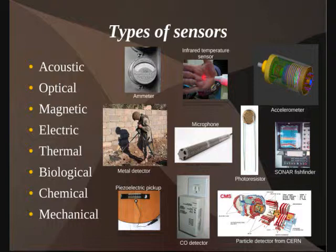For some specific examples: there's the ammeter, which detects the amount of current in a circuit. The infrared temperature sensor monitors temperature based on infrared radiation from an object. You're probably familiar with the accelerometer from a Nintendo Wii remote. A metal detector detects changes in the magnetic field. A microphone picks up sound waves. A photoresistor monitors changes in light. A sonar fish finder uses acoustic waves to locate fish. A piezoelectric pickup creates an electric signal based on material compression, picking up instrument vibrations. A carbon monoxide detector monitors CO in the air. And the particle detector from the Large Hadron Collider at CERN is a great example of how research pushes the development of new, complex sensors.